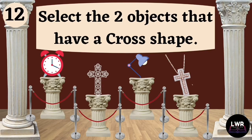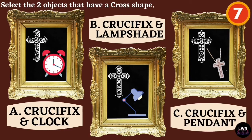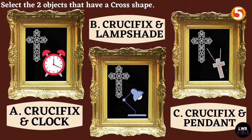Question number twelve. Select the two objects that have a cross shape. Letter A, crucifix and clock. Letter B, crucifix and lampshade. Or letter C, crucifix and pendant.